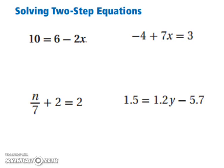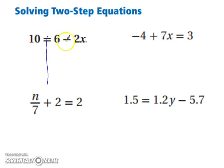Let's try a couple. We want to solve two-step equations and get x by itself. Our six and our two are both numbers on the same side of the equation as the variable x. However, which number is being added or subtracted? The six is, because it's two times x. So you're going to undo addition and subtraction first.